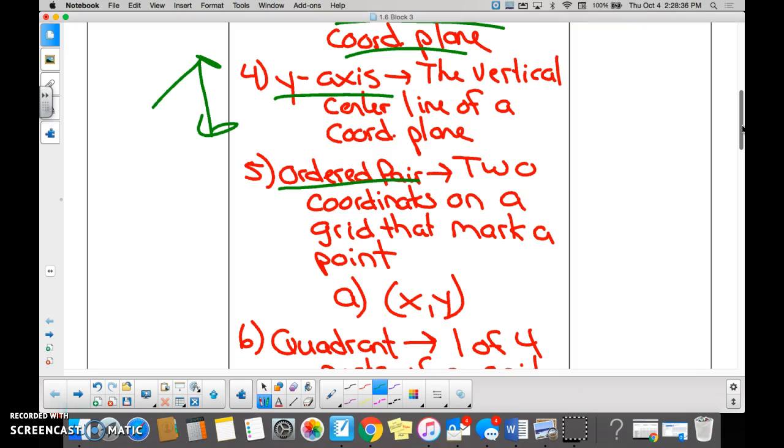An ordered pair would be the coordinates that mark a point on a grid. And in the ordered pair, you have an X coordinate and a Y coordinate. Which one do you always start with again? X. Yes. And then that one goes across and the Y goes up and down.